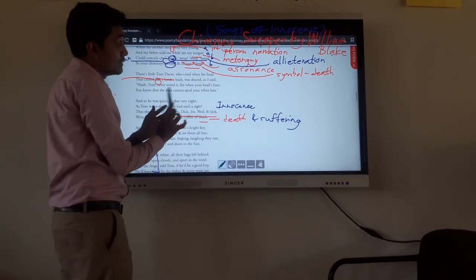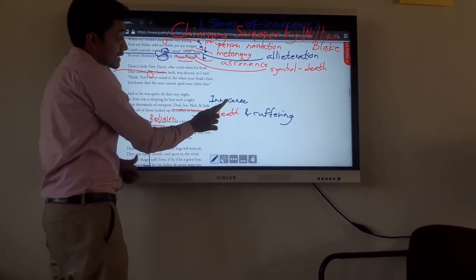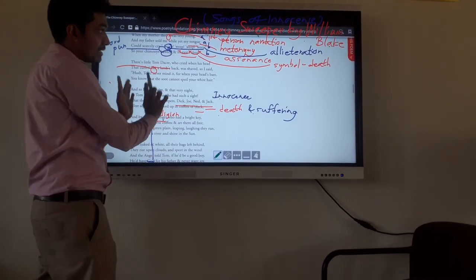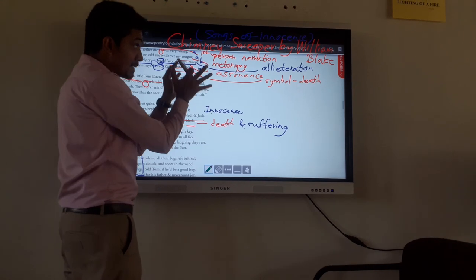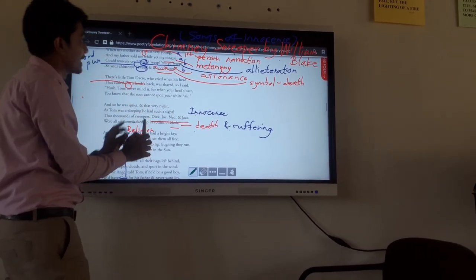When we come to this poem, it focuses basically on child exploitation, theme of death and suffering, innocence, and religion. Focused on these basic themes, we are going to analyze the poem in a short way.